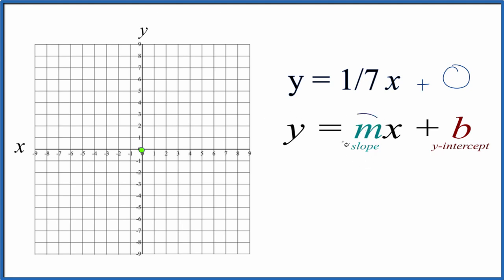For the slope, that's m, that's one-seventh, and you can think of that as rise over run. So we go to the y-intercept here, we rise one, and we go seven to the right, and there's our point.